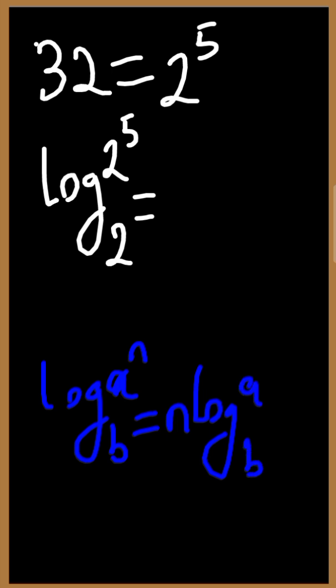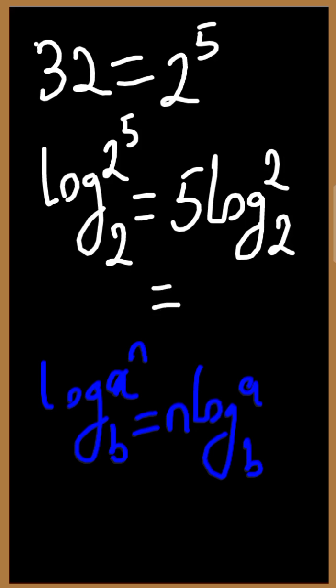This will simply be equal to 5 log base 2 of 2. Log base 2 of 2 equals 1, so this will be equal to 5 times 1, which is 5. Therefore, A equals 5.